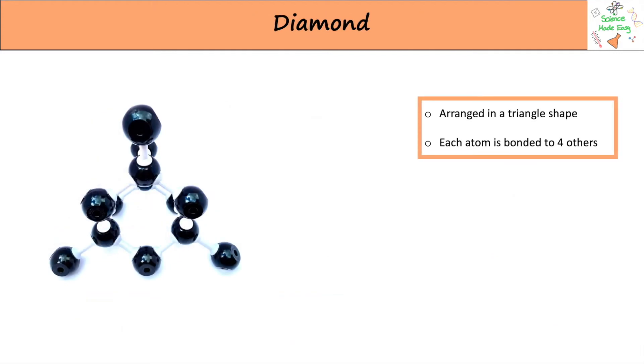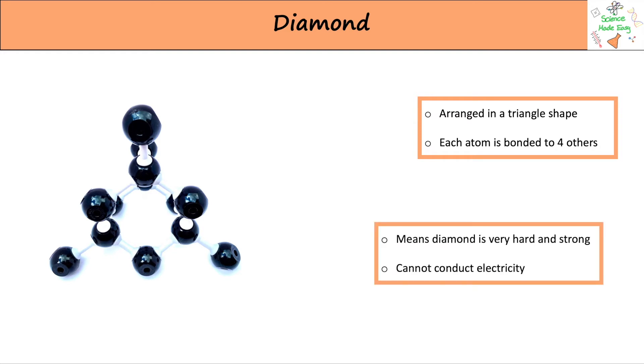Diamond is arranged into a triangular shape with each atom being bonded to four others. This triangular shape means that diamond is very hard and strong as any weight put onto the structure is evenly distributed across the whole thing.